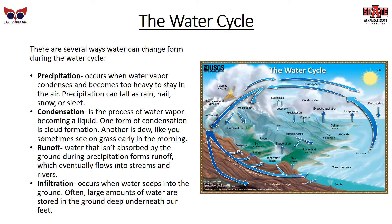Condensation is water vapor becoming a liquid, which plays a role in cloud formation and dew, like you see on the grass early in the morning. Runoff is water that isn't absorbed by the ground during precipitation — it forms runoff which eventually flows into streams and rivers. Infiltration occurs when water seeps into the ground. Often, large amounts of water are stored deep underground beneath our feet.